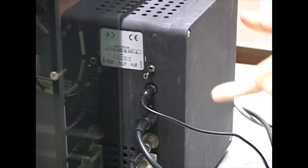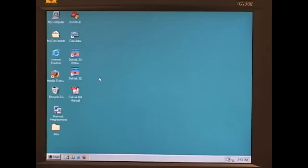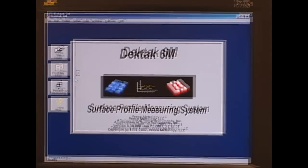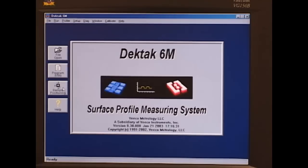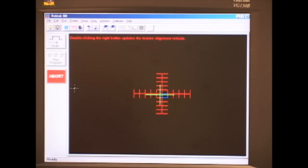After the computer has been turned on, we can go ahead and turn the instrument on, which is a switch in the back of the instrument. So we want to turn the DECTEC 32 program on. Once the program is loaded up, we'll click on the left menu, the sample positioning button. And that brings up a screen that will show us the camera view of the sample stage.